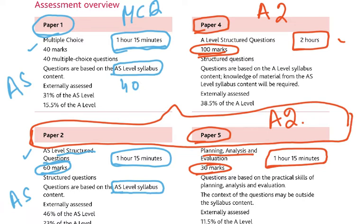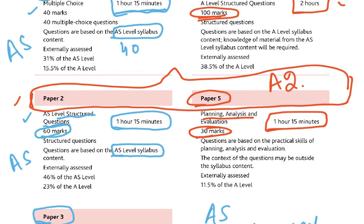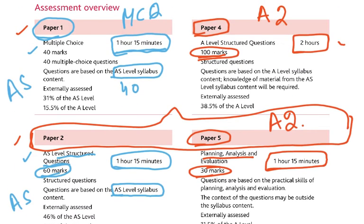So if a student has taken Paper 1, Paper 2, and Paper 3 in 2023, they will only take Paper 4 and Paper 5 in 2024. But if a student taking the composite in 2024 takes all 5 papers, Paper 2 and Paper 5 are both on the same day — always tabled together. You take Paper 2, then have a 10-minute break, and then do Paper 5. That is the Cambridge rule.